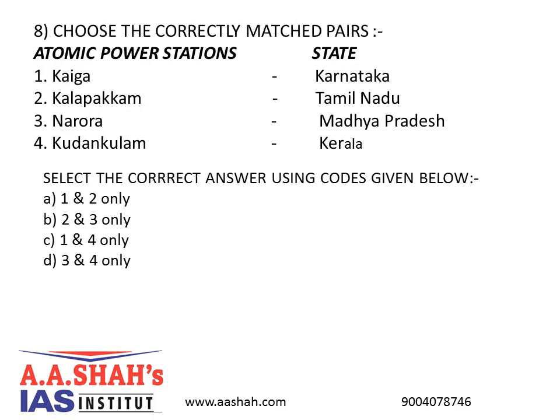8. Choose the correctly matched pairs — atomic power stations and their states. Select the correct answer using the codes given below. A: 1 & 2 only. B: 2 & 3 only. C: 1 & 4 only. D: 3 & 4 only. Answer: A.